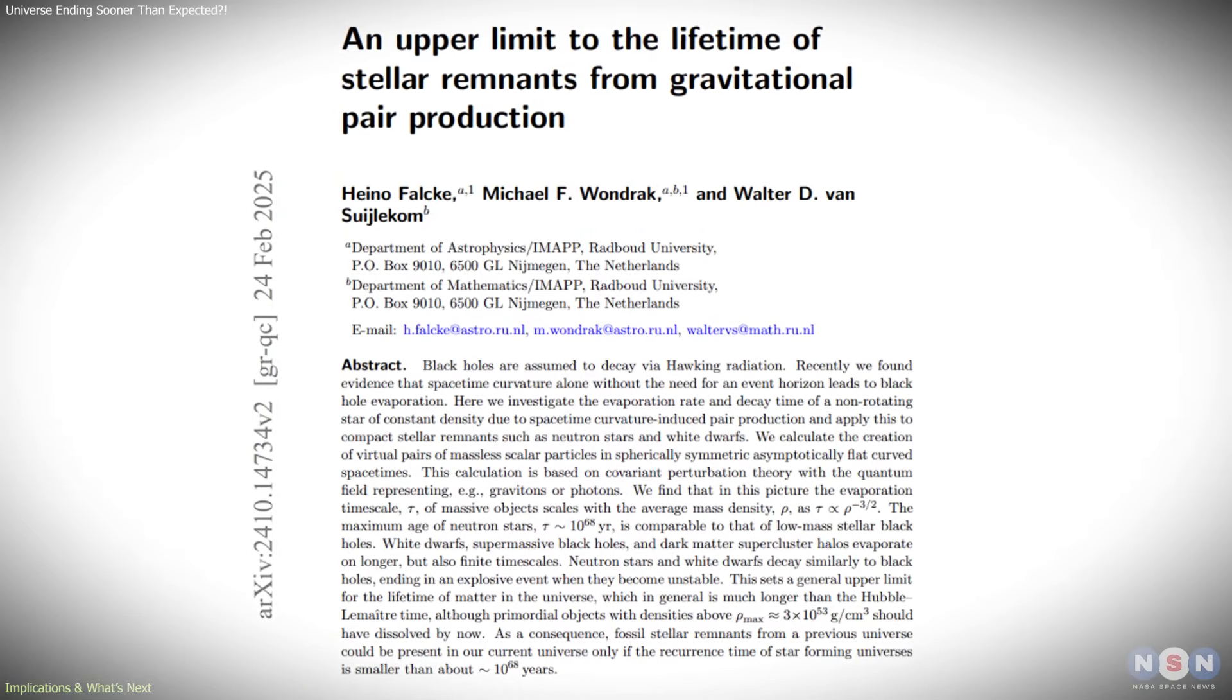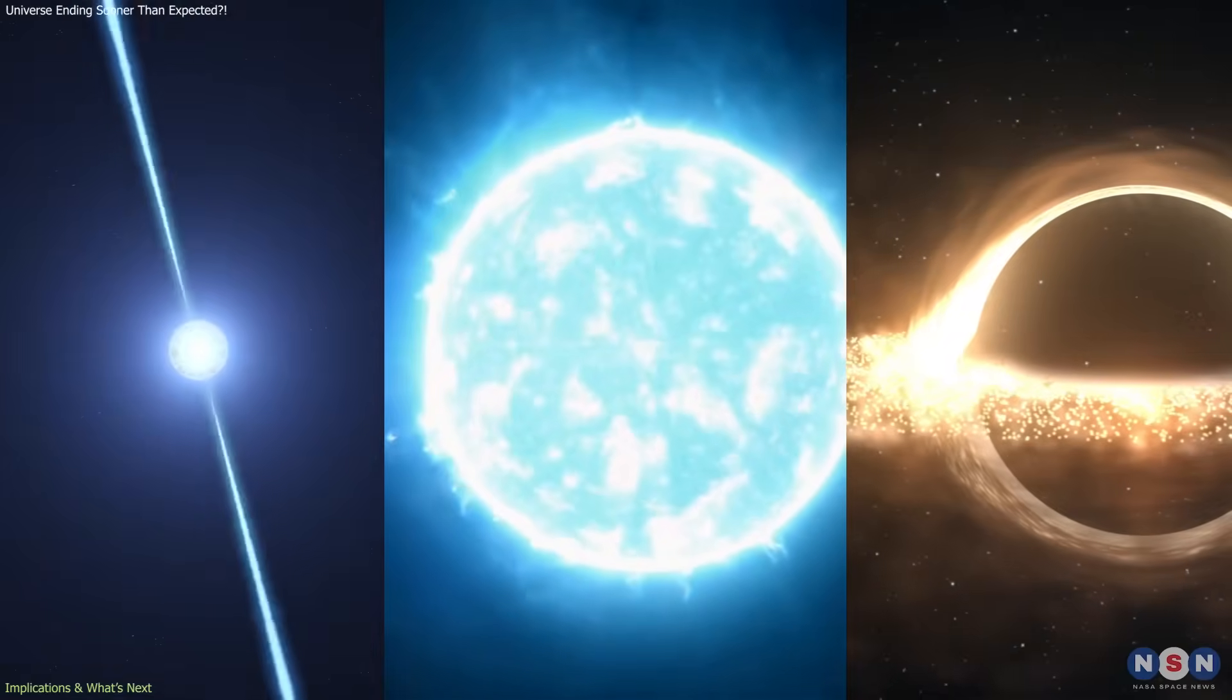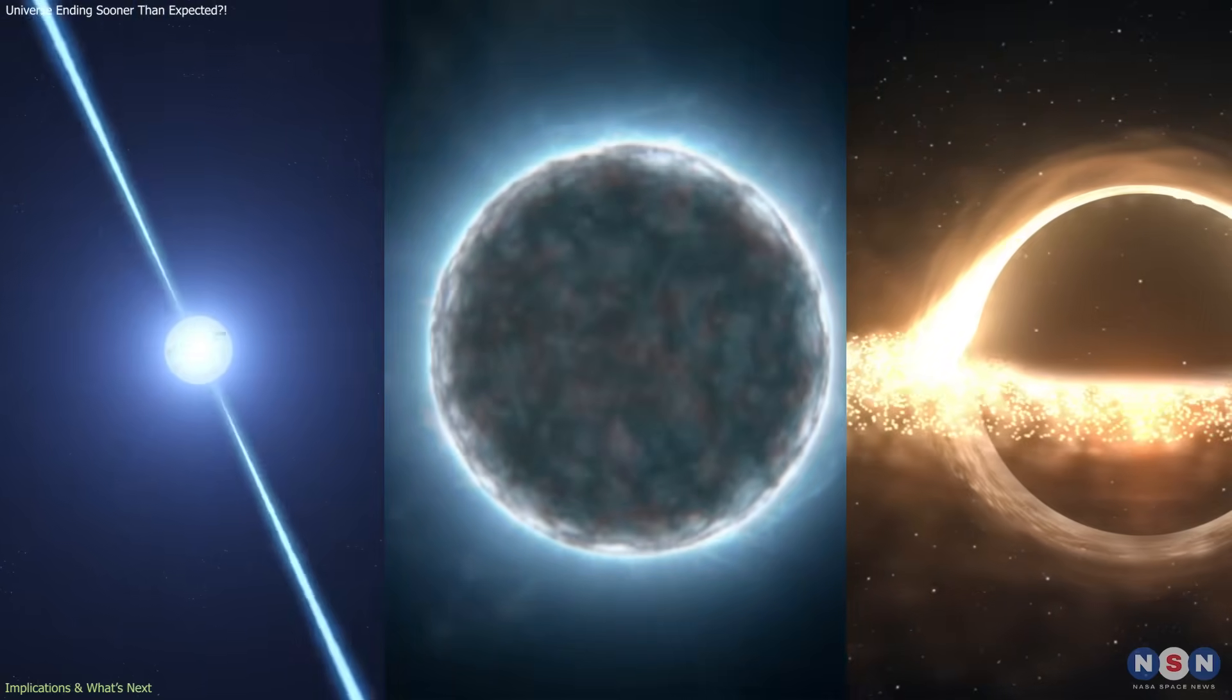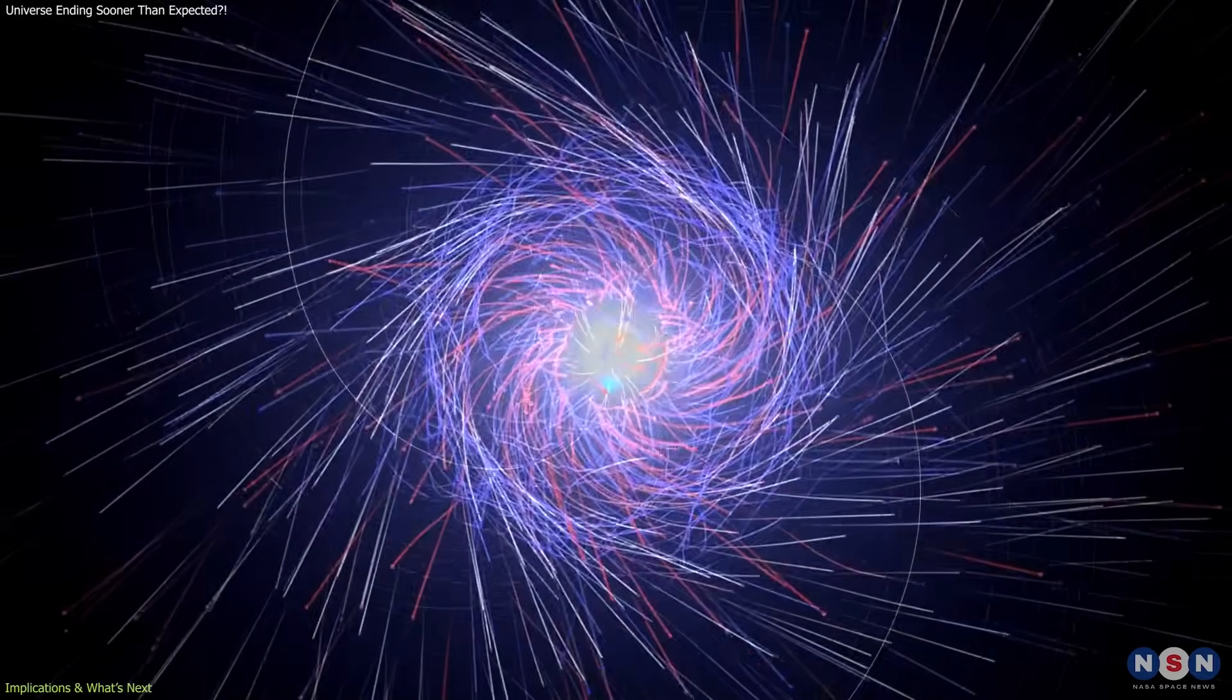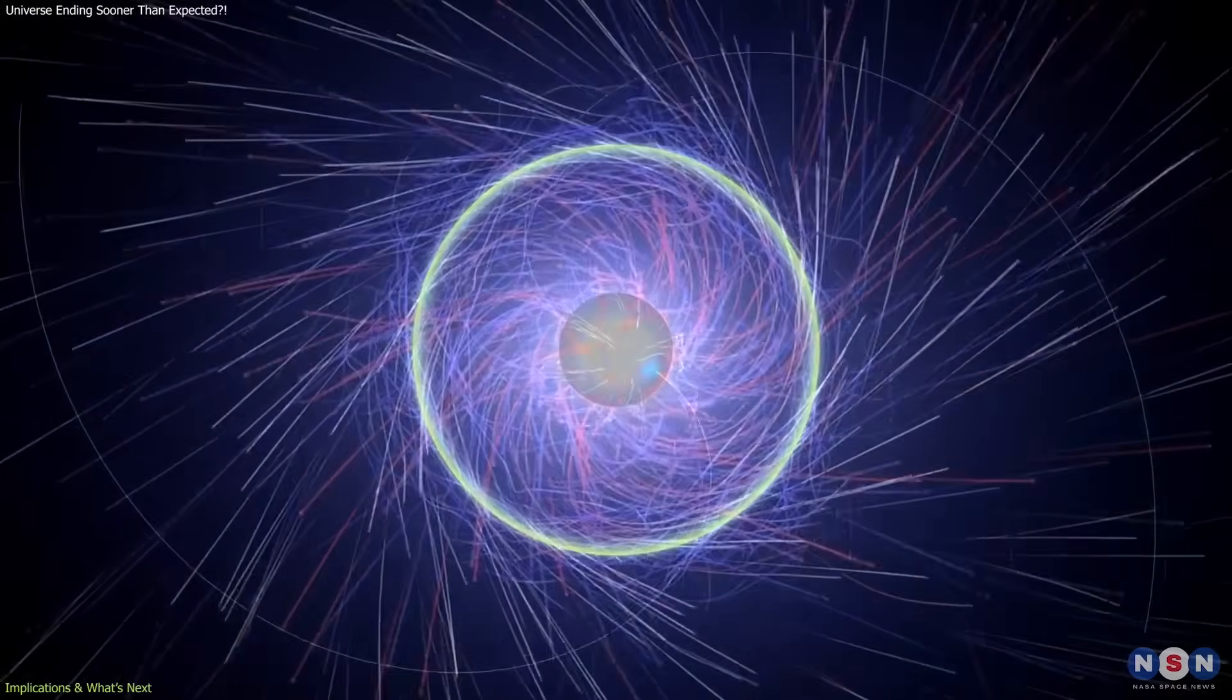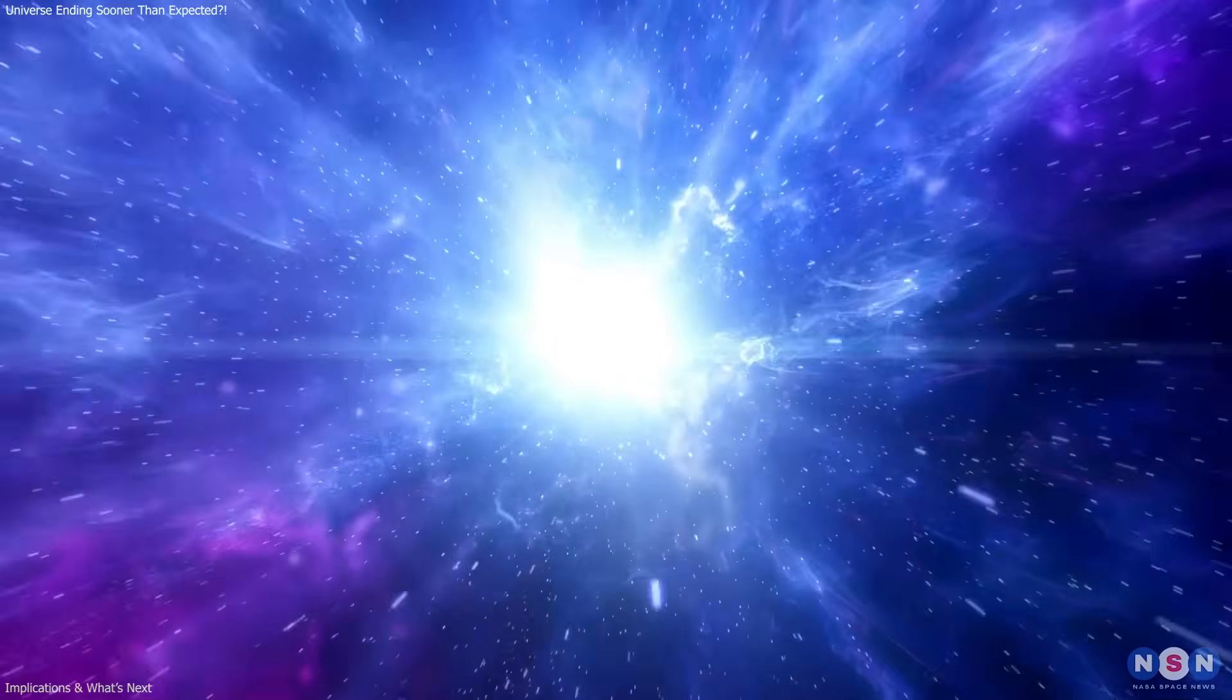The study also introduces a unified perspective on the fate of matter. Rather than treating each category of compact remnants separately, the model shows that they all follow the same ultimate trajectory. Once the mass loss becomes significant compared to the object's total energy, evaporation accelerates, and the object disappears completely. For the universe as a whole, this means that its final constituents are temporary.